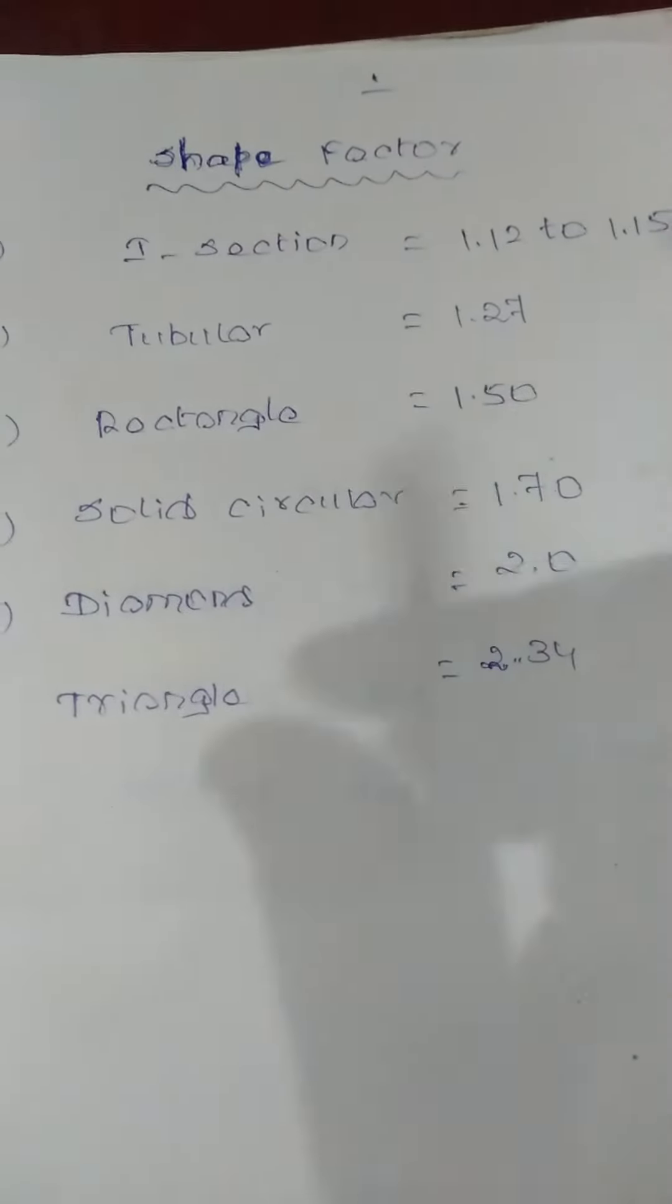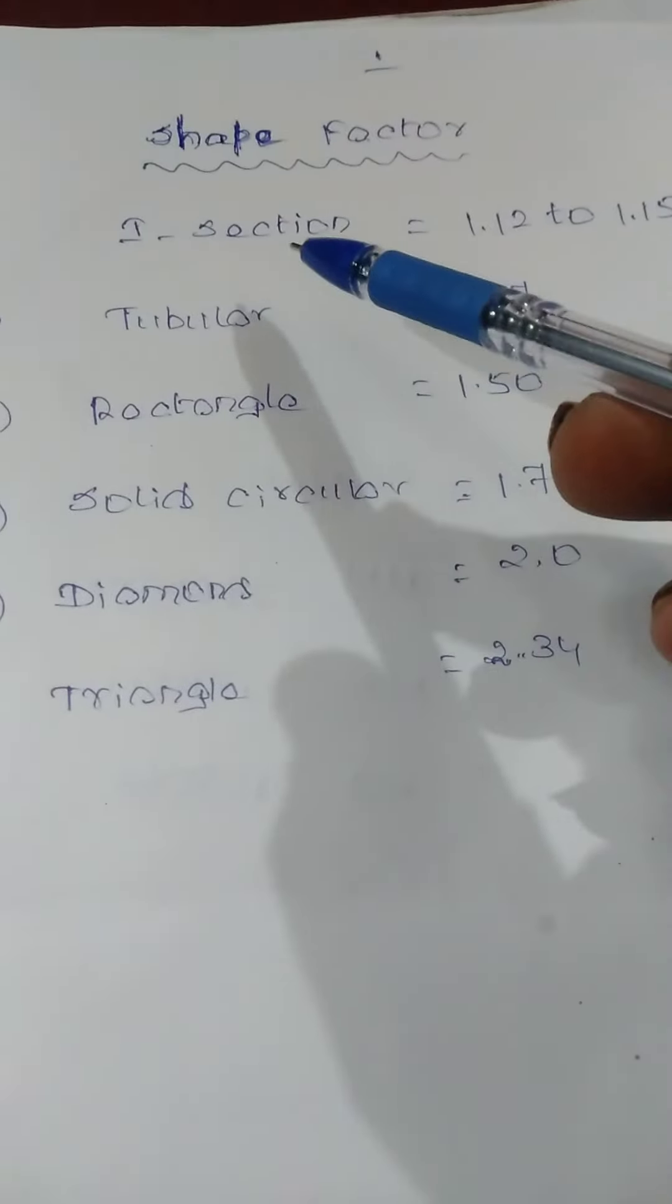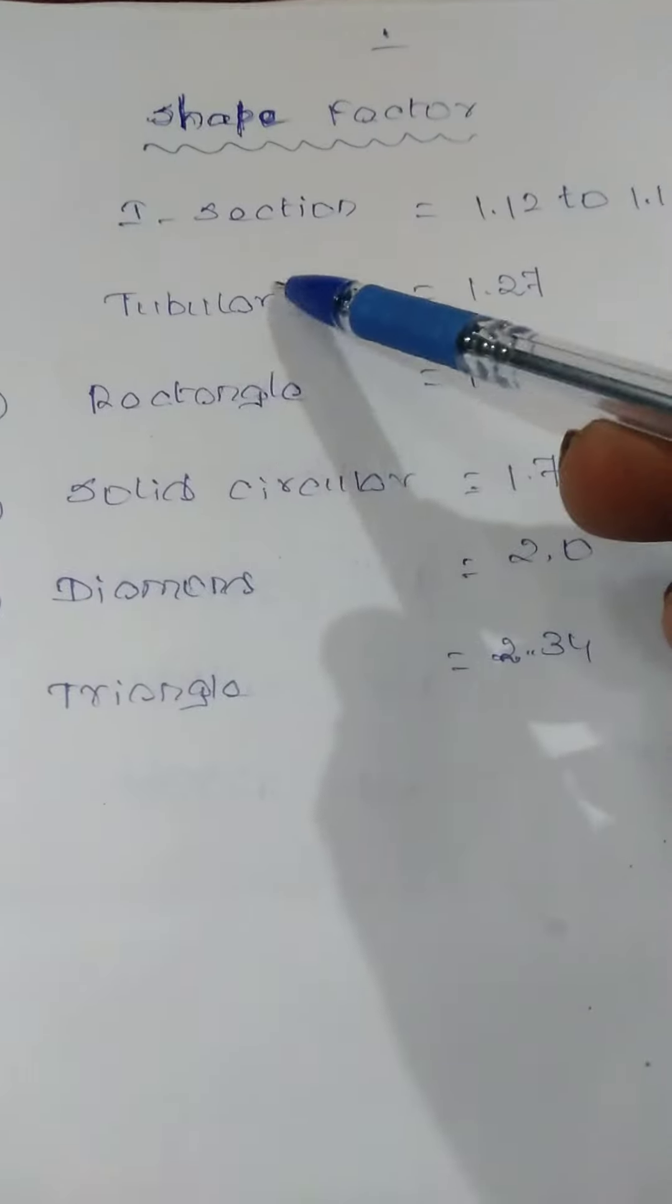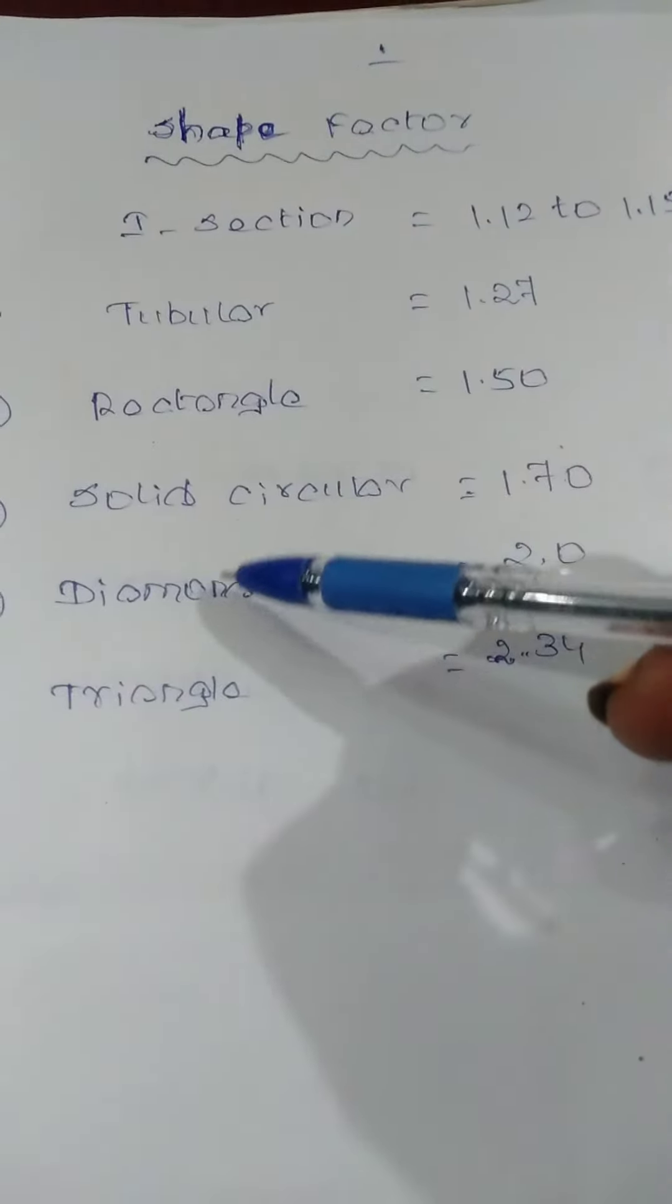If you look at the order of increasing section, you will know the ascending order: I-section, tubular, rectangle, solid circle, diamond, triangle.